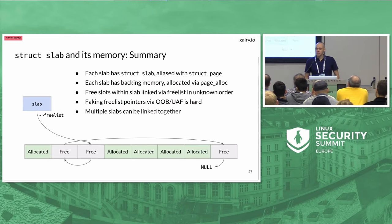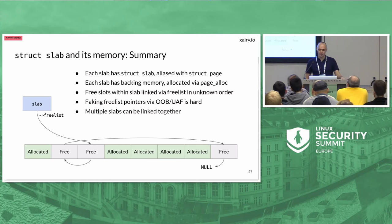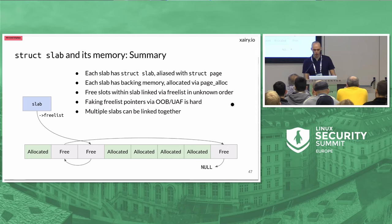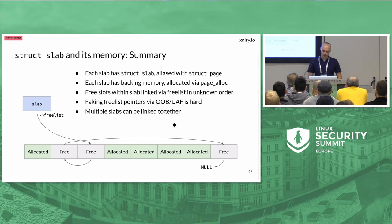As a summary about the slab structure: each slab has its own struct slab, its own backing memory allocated from pagealloc, and one free list containing the free slots within the slab — with the freelist pointers stored within the free slots themselves. Faking freelist pointers is hard, so we'll mostly focus on overwriting other objects. Multiple slabs can be linked together in two different ways used for per-CPU versus per-node slabs.